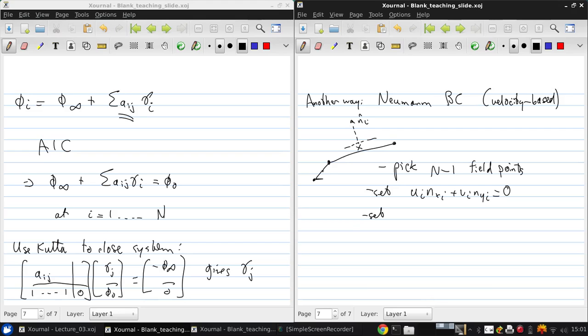We then also set the Kutta condition again: gamma_1 + gamma_n = 0. And then we solve the n-by-n system of equations for the unknown gamma_j. So here the advantage is that we have a smaller system of equations, and we're not introducing any extra variables.